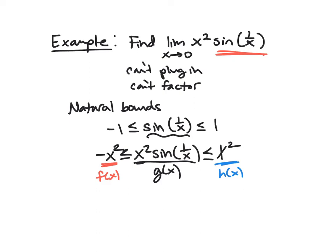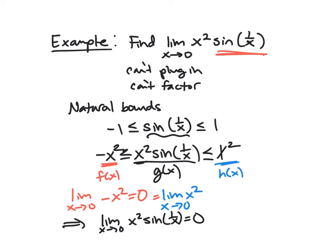And so now, think about these two functions, f and h. Well, those are pretty easy. So the limit of negative x squared as x approaches 0, well, that we can just plug in, we get 0. And same thing for h of x. Plugging it into x squared is also going to give us 0. And so we have our inequality. g of x is squeezed between these two guys, and they both go to 0. Therefore, the limit as x approaches 0 of x squared times sine of 1 over x must also be 0.